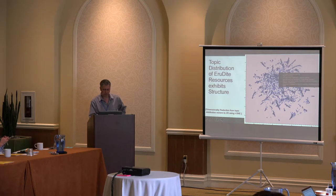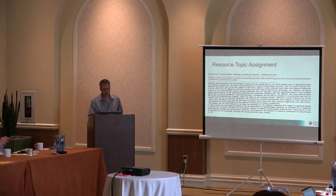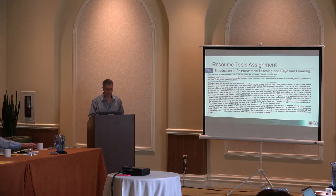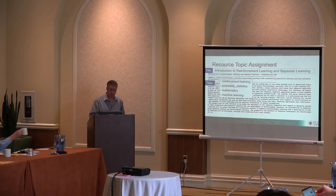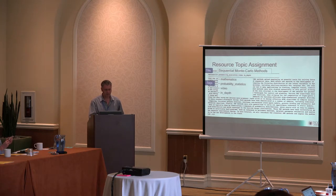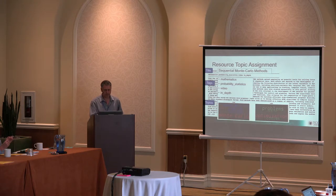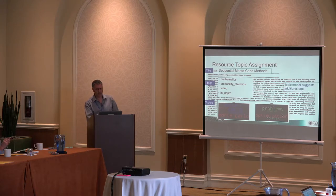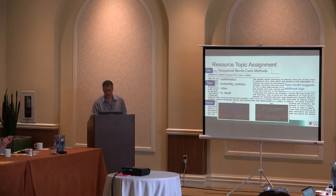For a specific resource — say, a class on reinforcement learning — we can assign tags manually, then run topic models to verify. The major topics come back as reinforcement learning, Bayesian inference, confirming our manual tags were accurate. For other resources, like sequential methods, the topics reveal additional concepts like Monte Carlo chain and optimization, suggesting additional tags. If we have enough data supporting a new tag, we add it to the ontology, or put it in the queue for more resources to accumulate.